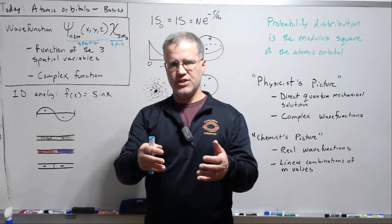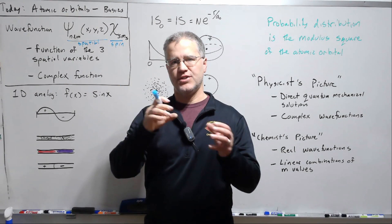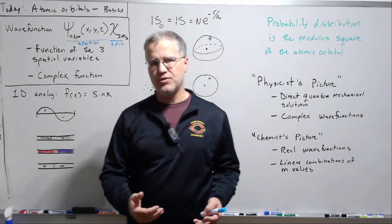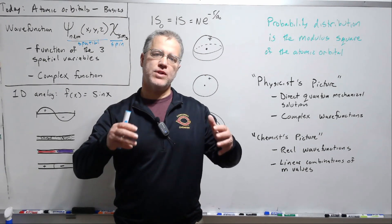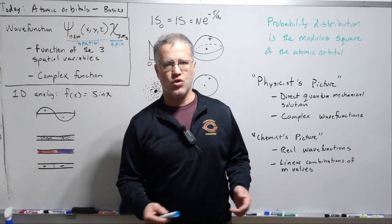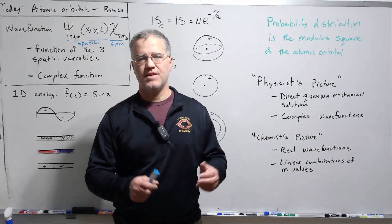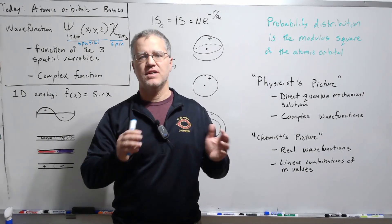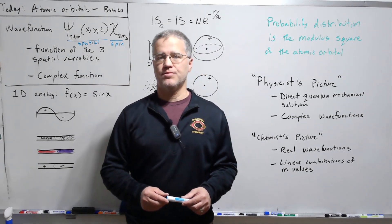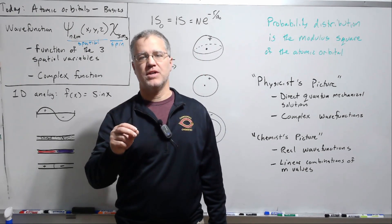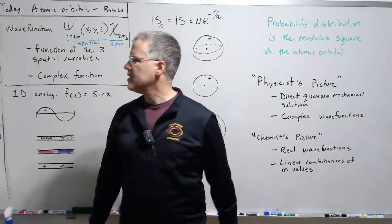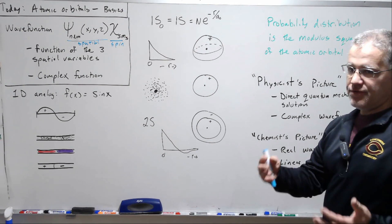The wave functions represent what's called the probability amplitude, upon which when you do something called the modulus square — and if you've had some complex function courses you know exactly what that is — just think of it as squaring the function. When we do that, we get something called the probability distribution, which is a real physical thing we can interpret as: here's the chance of finding the electron. Since we're in 3D space, it's a function of three variables.